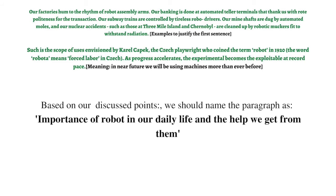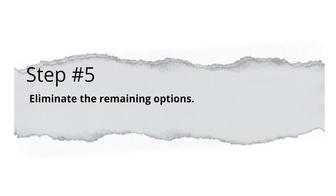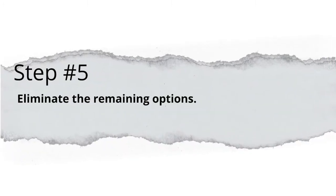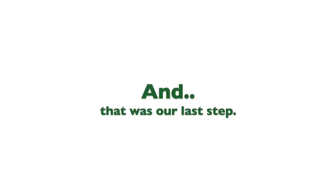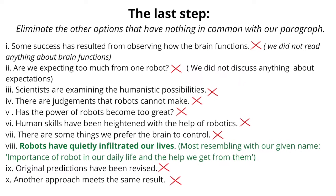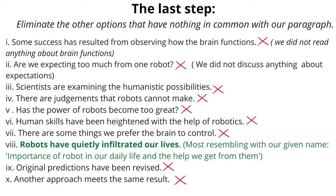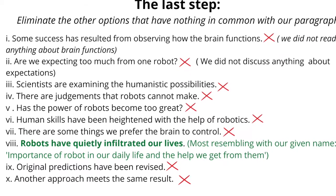Once you have selected the name you want to give the paragraph, now it's time to finally look at the headings. We will read all the headings given to us and find the one that resembles the most with the name we decided on. Once we find a resembling option, it's time to eliminate all the other options in order to cross-check if we have the most suitable answer. By the end of these steps, you will be left with only one option, which will be your title for the given paragraph. So, let's try it once.